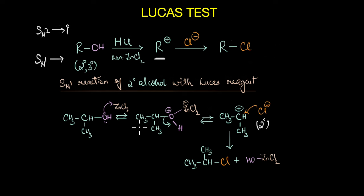The SN1 reaction of a tertiary alcohol also proceeds the same way where we get a tertiary carbocation which is then attacked by a chloride ion giving us a tertiary alkyl chloride. Alright now we understood what exactly happens in the Lucas reaction.